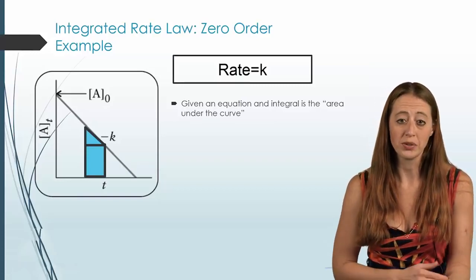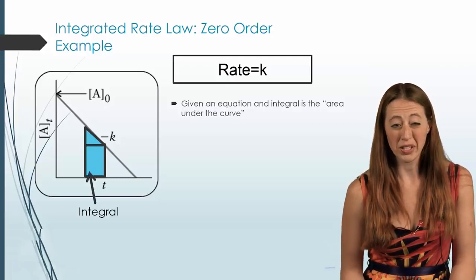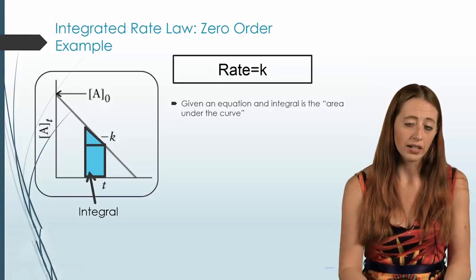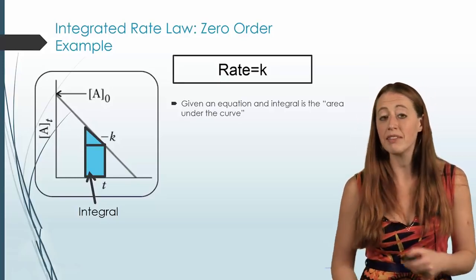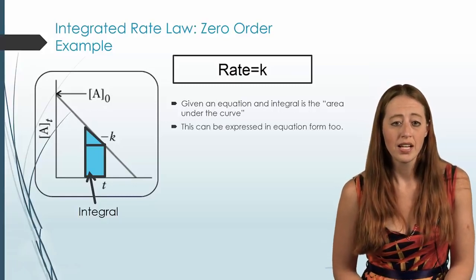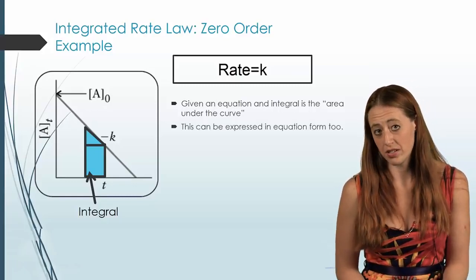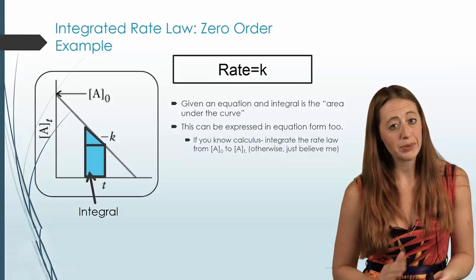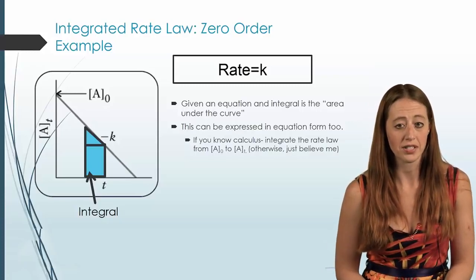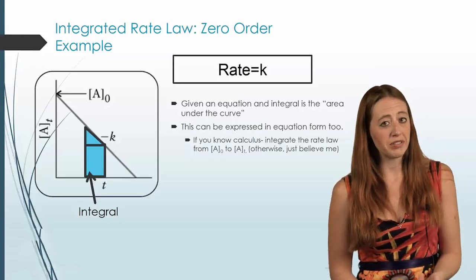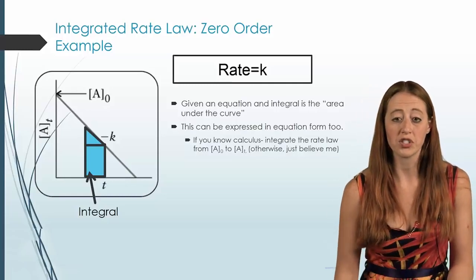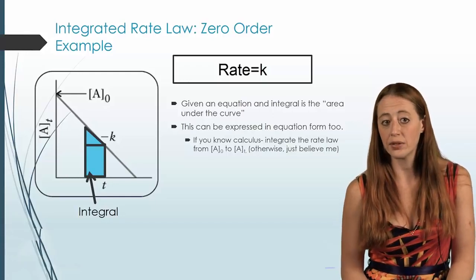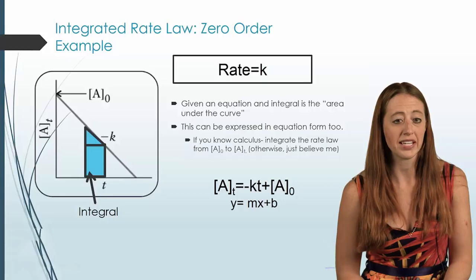We can pick any two points to do this. That's what we call an integral — you don't have to worry about solving for it, but it's a good definition to know. We could also express this as an equation, and use it to go back and forth between time, initial concentration, and final concentration. This is the part where differential equations is involved in finding the equation, so we're just going to give it to you.